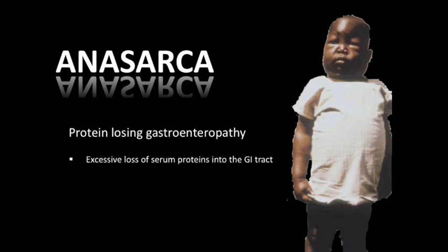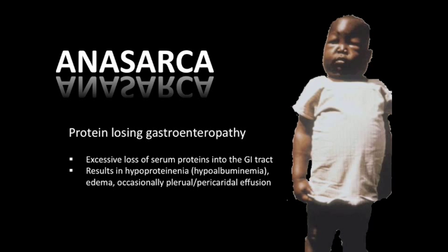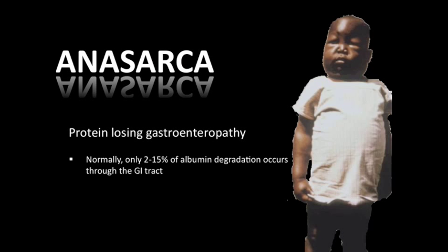You should know a few things about protein-losing gastroenteropathies. As their name suggests, they cause serum proteins to be lost in the GI tract. This results in hypoproteinemia and hypoalbuminemia, causing edema. Other causes of anasarca — cirrhosis, cardiosis, nephrosis — should be ruled out first. The GI tract normally does degrade some albumin, about 2 to 15%, but much more is lost in these enteropathies. Stool alpha-1-antitrypsin can help in making the diagnosis.